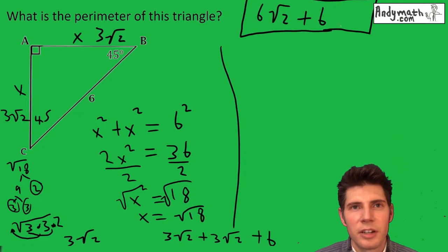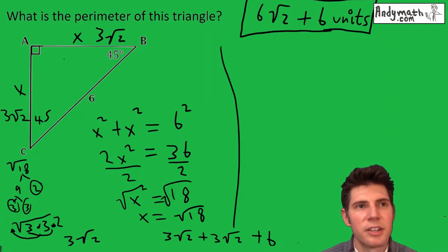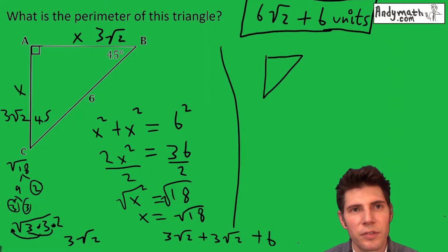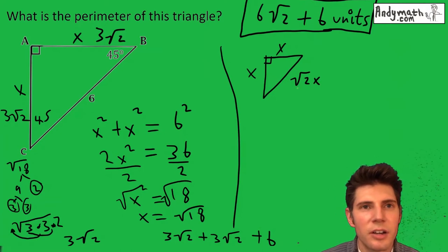The other way to do this would be to recognize it is a 45-45-90 triangle. In all 45-45-90 triangles, this side is x, this side is x, and this side is root two times whatever those sides are.